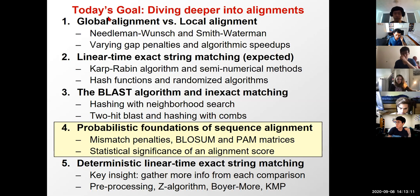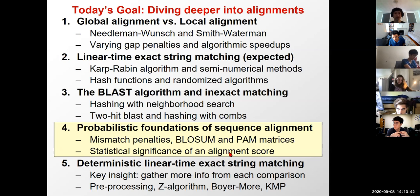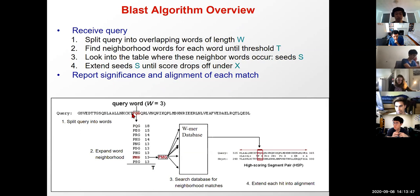Now let's switch gears and talk about the probabilistic foundations of sequence alignment. Where do match and mismatch penalties come from? We're going to review the BLOSUM and PAM matrices and see where they come from, and how to compute the statistical significance of an alignment score.